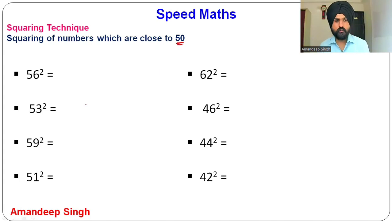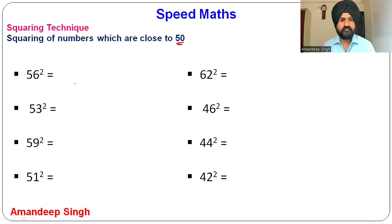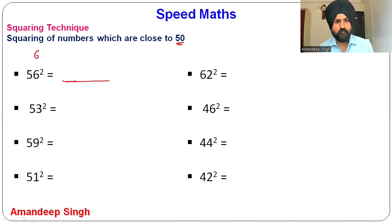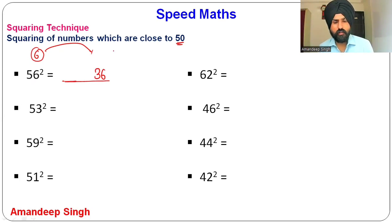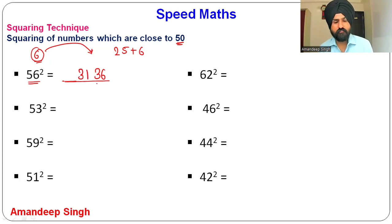Let's start with how to find the square of numbers close to 50. If you have numbers like 56², 53², 59², and so on, the method is very simple — you can directly write the answer. The first step: how much is this number more than 50? For 56, it is 6 more, so write 6² = 36 at the end. Then add that extra part (6) to 25: 25 + 6 = 31. So 56² = 3136.